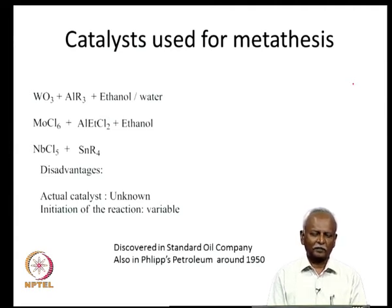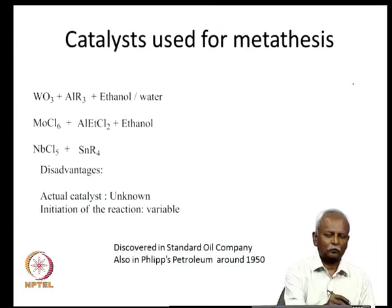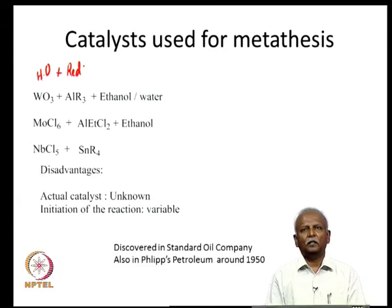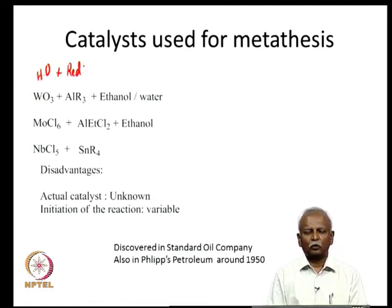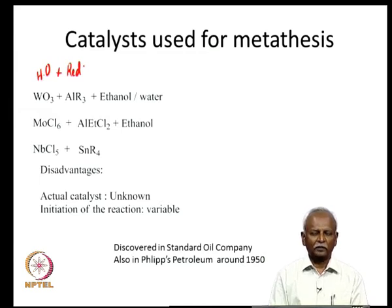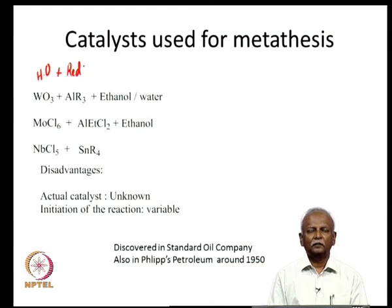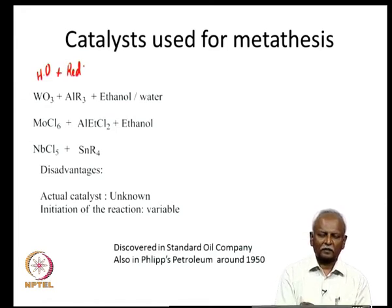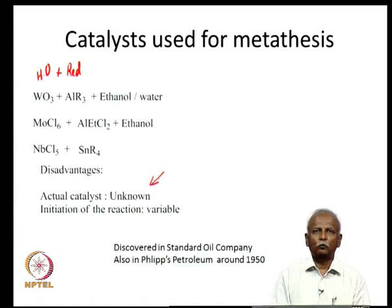This was followed by a reducing agent — very often an aluminum alkyl species, aluminum alkyl or aluminum alkyl chloride. Surprisingly, small amounts of ethanol or water were also required to initiate the reaction. There were several disadvantages: the catalytic species was not known — it could be a variety of different species generated from this mixture — so the catalytic species itself could not be modified. There was very often an initiation period required to start the reaction.